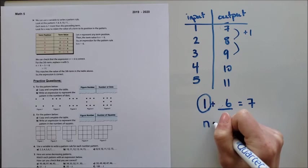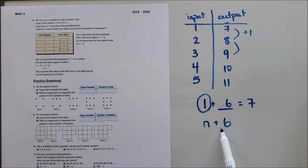If I want to have a pattern rule, I'm going to have n plus six, and this will help me figure out what the value is going to be, no matter what number I want to put into that equation.